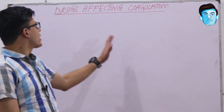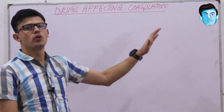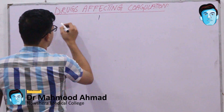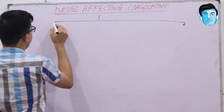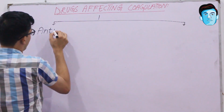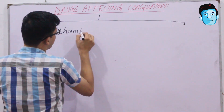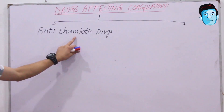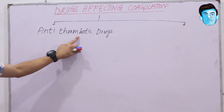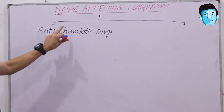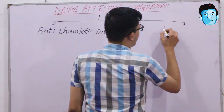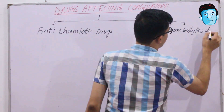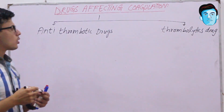Assalamu alaikum doctors. Today our topic of discussion is all around drugs affecting the coagulation. There are two varieties of drugs that affect the coagulation: antithrombotic drugs and thrombolytic drugs. Antithrombotic drugs prevent platelet aggregation and also prevent thrombus formation. Thrombolytic drugs dissolve the already formed thrombus.